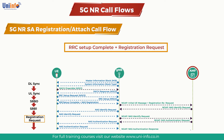The Registration Request also carries UE network capability information. The gNodeB selects the Access and Mobility Function (AMF) for this session and allocates a RAN UE NGAP ID to the UE. The AMF will use this ID to address the UE context on the gNodeB.